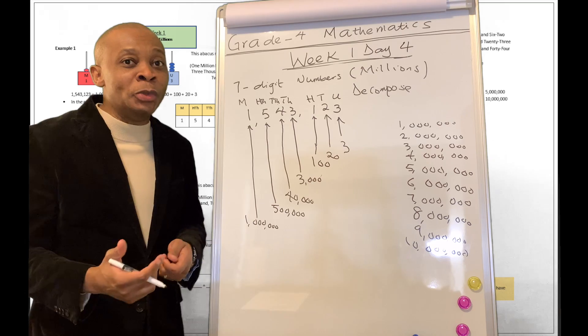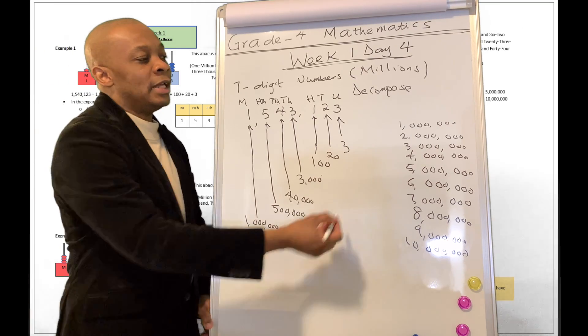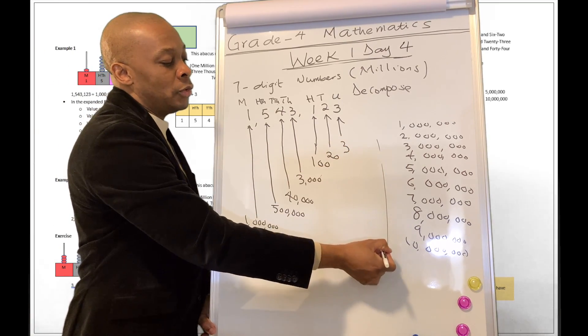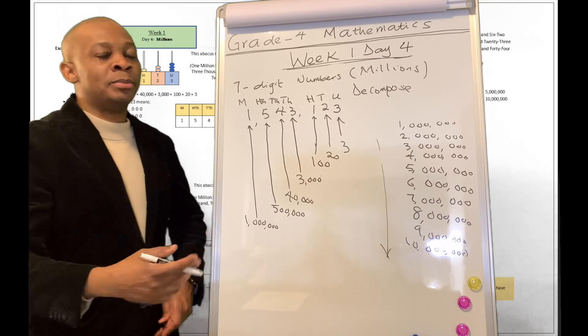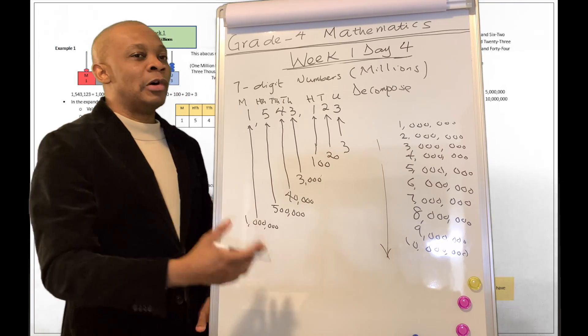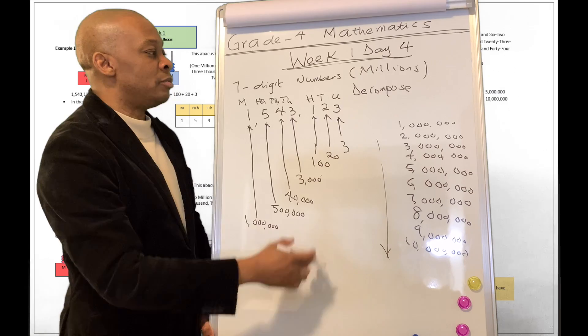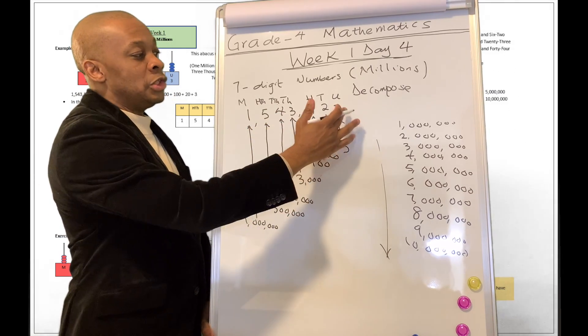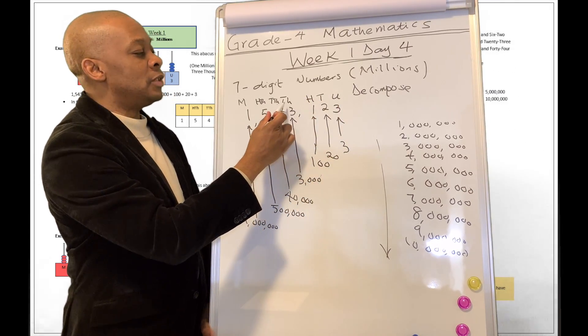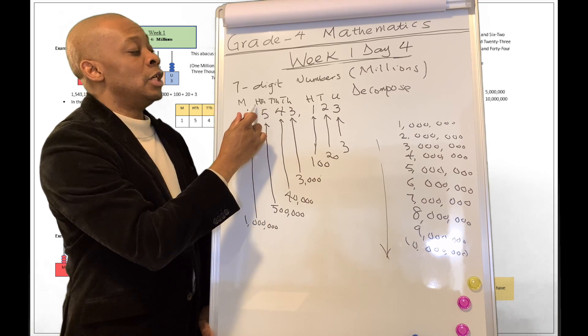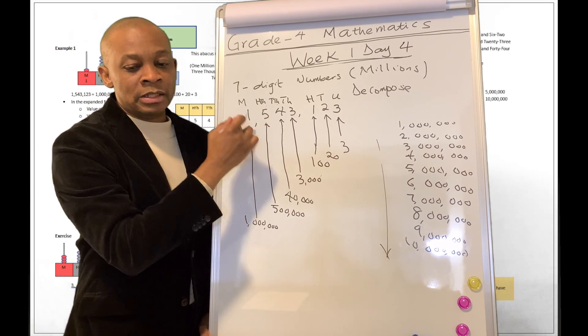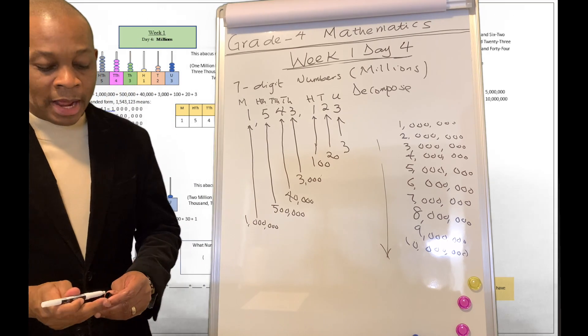Those are really huge and large numbers. But you kind of get the idea, and you can actually walk your way from here, understanding place values. It's going to follow the same logic. So remember, seven-digit numbers: units, tens, hundreds, thousands, tens of thousands, hundreds of thousands, and in the millions.